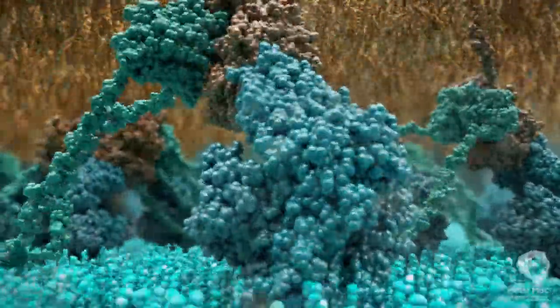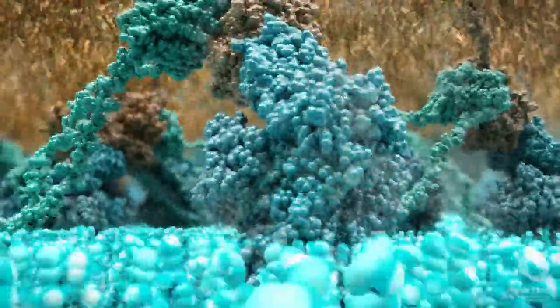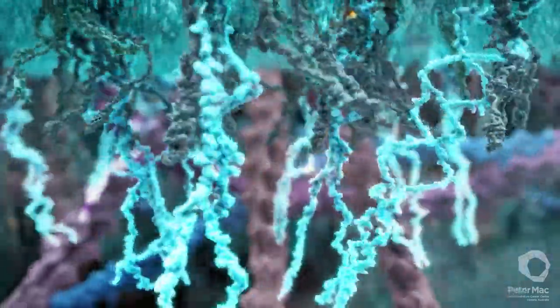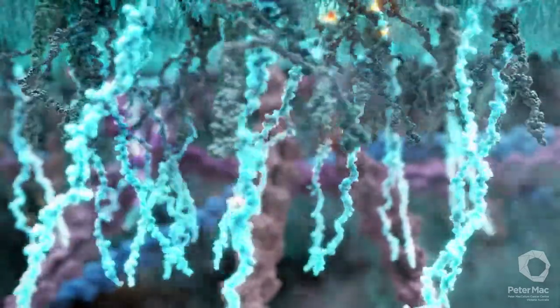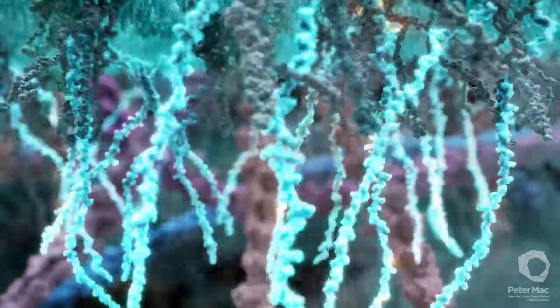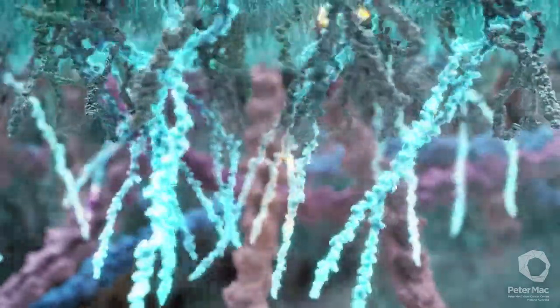We will now move below the cell surface, inside the killer T cell. These long glowing chains form the internal part of the T cell receptor. These chains begin the complex signaling process that activates the killer T cell after receptor binding and clustering.